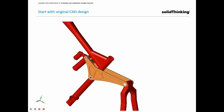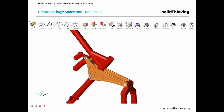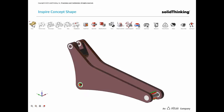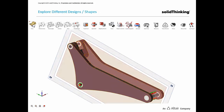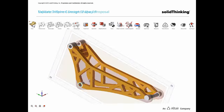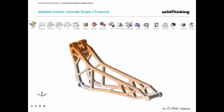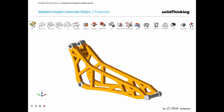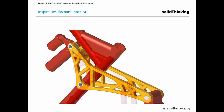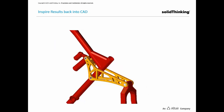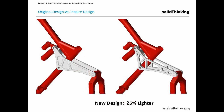Here we are capturing the process flow which I demonstrated: creating a package space, applying manufacturing constraints, generating the extrusion concept, and performing analysis. This was the final design which they ended up fitting on the original component. The new design was around 25% lighter, achieving the same performance as the existing design.